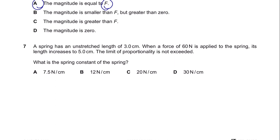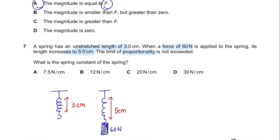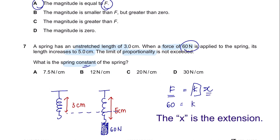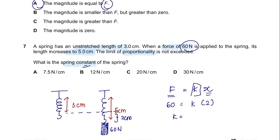Question 7. A spring has an unstretched length of 3 cm. When a force of 60 N is applied, its length stretches to 5 cm. The limit of proportionality is not exceeded. What is the spring constant? Using F = Kx, where F is 60 N and x is the extension—the spring has extended an extra 2 cm. So K = 60 ÷ 2 = 30 N/cm. The answer is D.